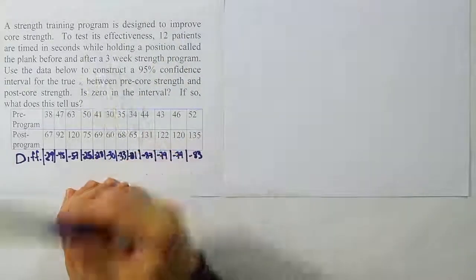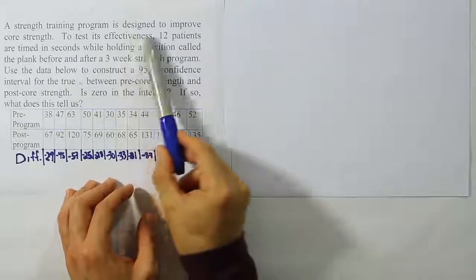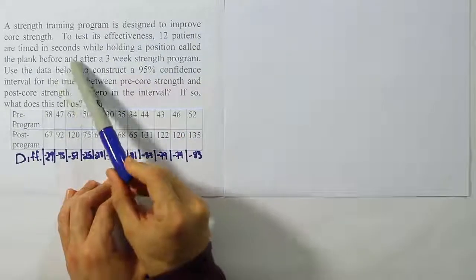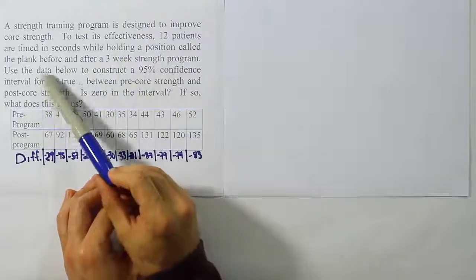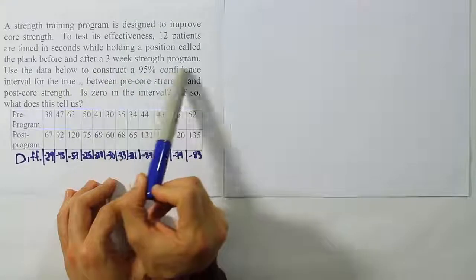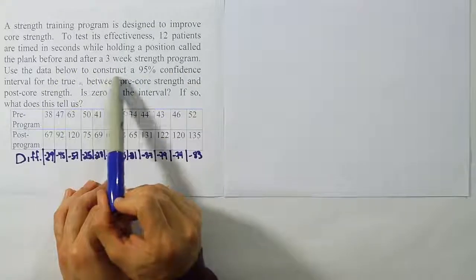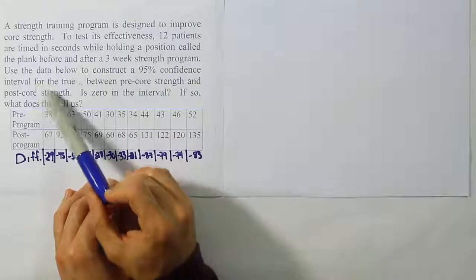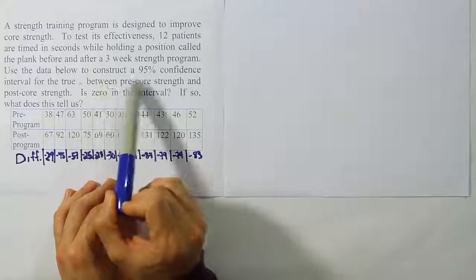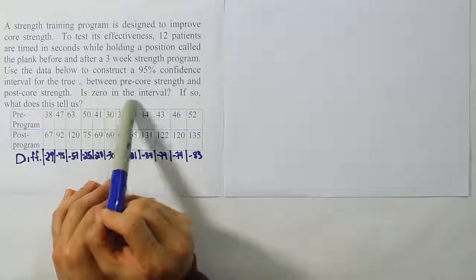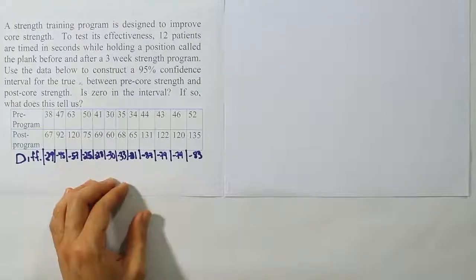A strength training program is designed to improve core strength. To test its effectiveness, 12 patients are timed in seconds while holding a position called the plank before and after a three-week strength program. Use the data below to construct a 95% confidence interval for the true mean difference between pre-core strength and post-core strength. Is zero in the interval? If so, what does this tell us?